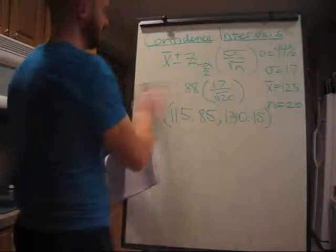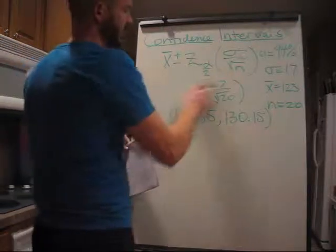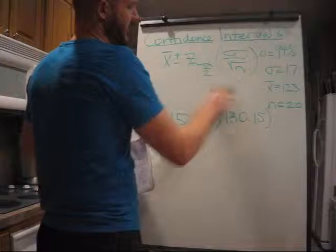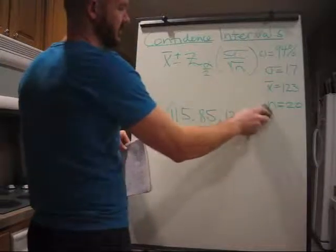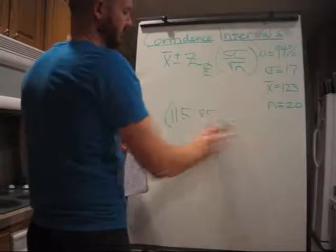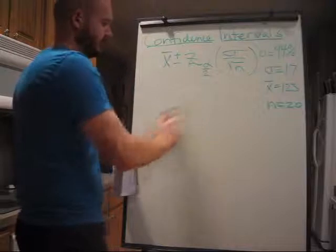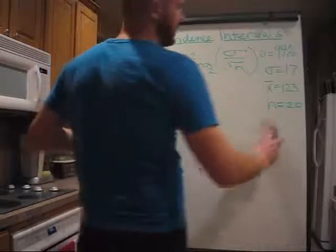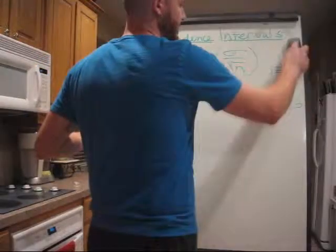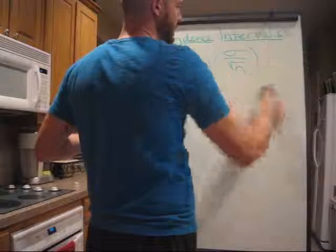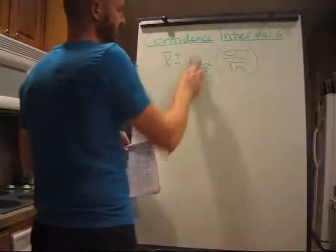We'll do another one with, see that one we had sigma known, population standard deviation was known. We'll do another one with population standard deviation unknown. And let's just get rid of all of this.